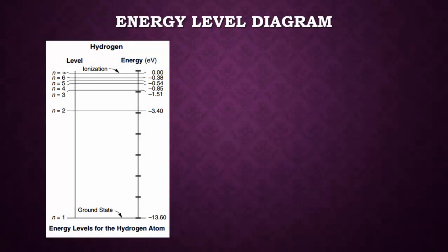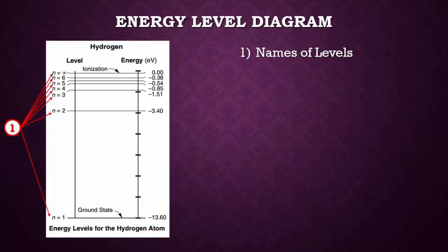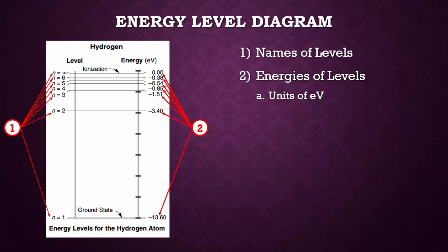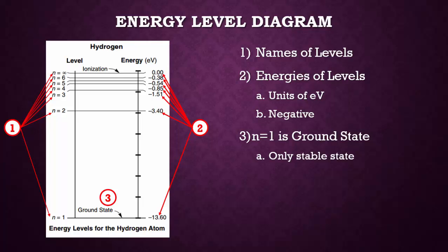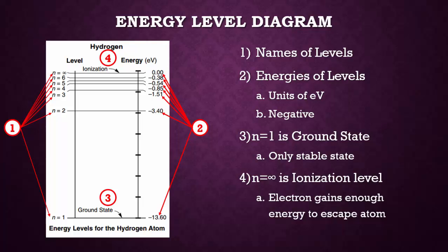This energy level diagram is another way to represent those energy levels. On the left, you have the names of the levels — for the hydrogen atom these are numbered, while for the mercury atom on your reference table the energy levels are lettered. On the right, we have the energies of the levels in units of eV. These energies are listed as negative. The level n equals 1 is considered the ground state — the only stable state; the electron can stay there forever. When the electron exists at a higher energy level, it will eventually transition back down. Notice that the highest energy level above n equals 6 is called n equals infinity, known as the ionization level, representing that the electron has gained enough energy to escape the atom.